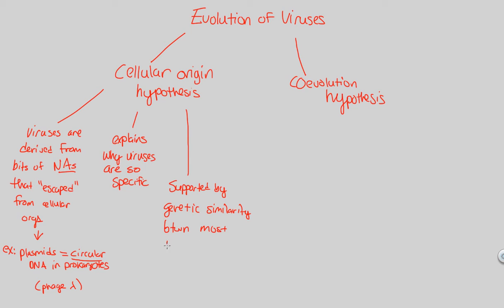Most viruses and host cells share a lot of their genetic information and genetic material. So, it would make sense that they probably originated from the cells in which they share these genetic similarities.